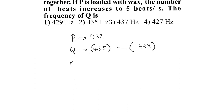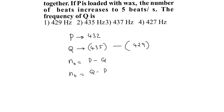The beat frequency can be equal to frequency of P minus frequency of Q, or the beat frequency can be equal to frequency of Q minus frequency of P. If P is loaded with wax, then its frequency is going to decrease. So if we use the first equation, as the value of P decreases, the beat frequency would also decrease. But according to the given condition, the beat frequency increased. So as the value of P decreases, the value of Q minus P increases, meaning the second equation must be correct.